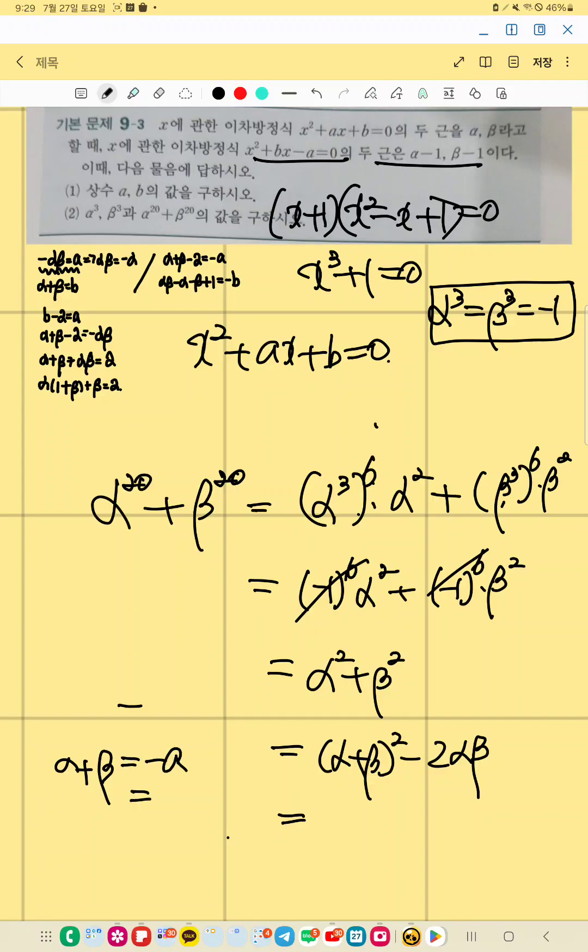Negative A. So A is negative 1, so 1. Alpha beta is 1, right? So 1 minus 2 equals minus 1.